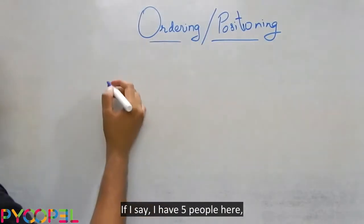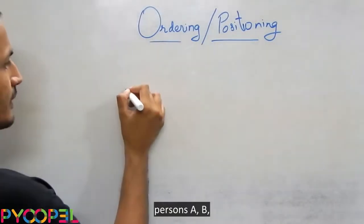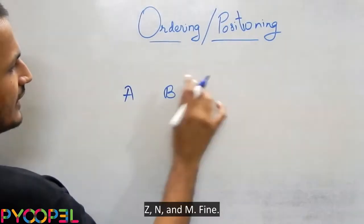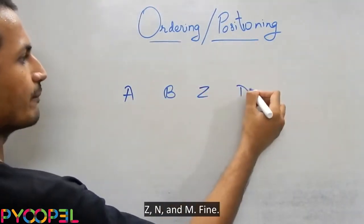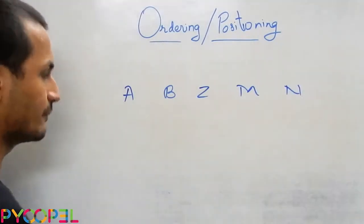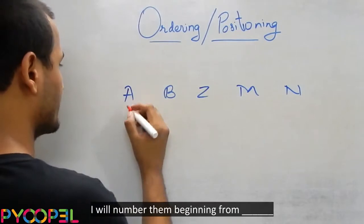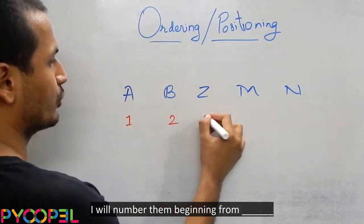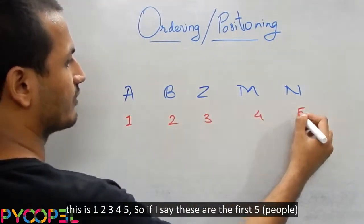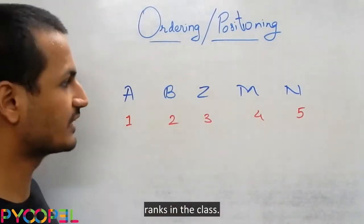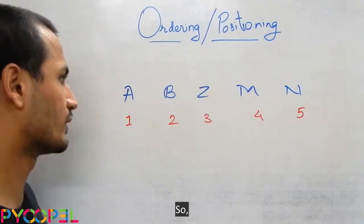If I say I have five people here, let's say person A, B, let's jumble this up, Z, M, and N. Now I'll number them beginning from person A. This is one, two, three, four, five. So if I say these are the first five people, these are the first five ranks in the class.